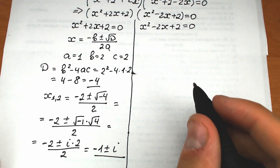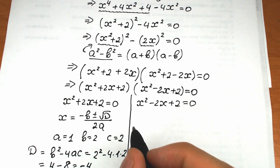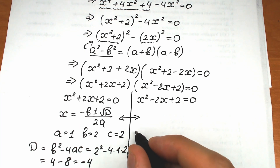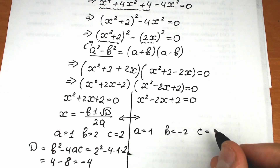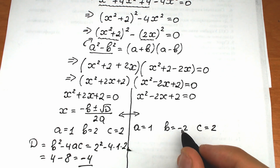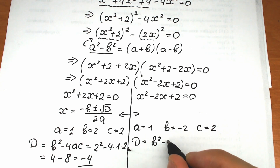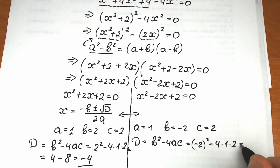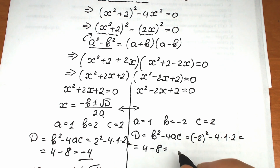Now let's find the third and fourth roots from the second case: x squared minus 2x plus 2 equals zero. Here a=1, b=minus 2, c=2. The discriminant is (minus 2) squared minus 4 times 1 times 2, which equals 4 minus 8, equal to minus 4 — the same discriminant.